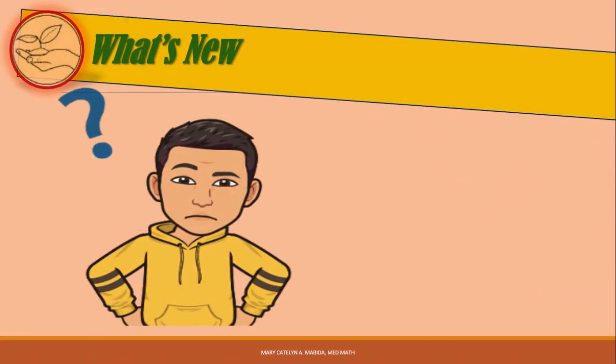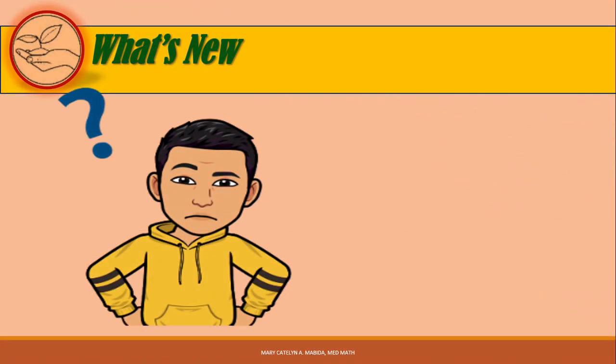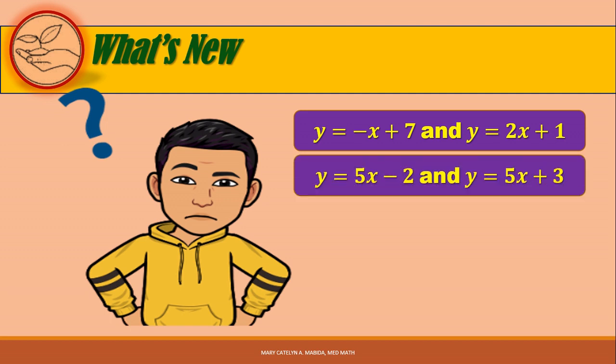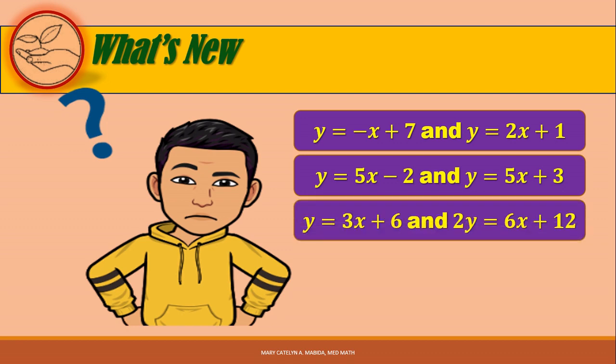Let's check out the following examples. We have: y = -x + 7 and y = 2x + 1. Number 2: y = 5x - 2 and y = 5x + 3. And our third example: y = 3x + 6 and 2y = 6x + 12.